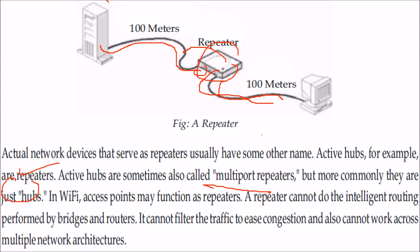Hubs perform the work of a repeater, including signal amplification. In Wi-Fi terms, access points are also nothing but repeaters.